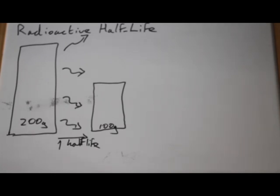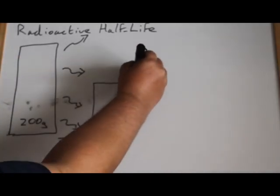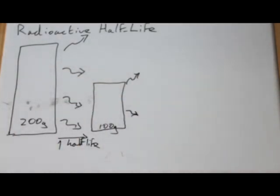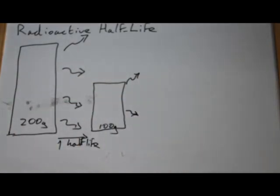That also means that the amount of radiation being given off will have halved. So now we've only got half as much radiation being given off. And that's the other definition for a half-life: it's the amount of time it takes for the amount of radiation being given off by a material to halve, or the number of atoms to halve.